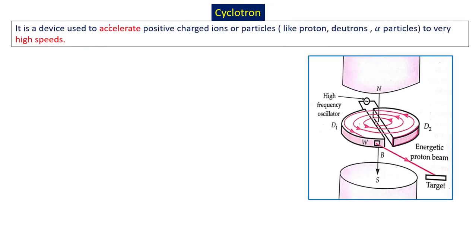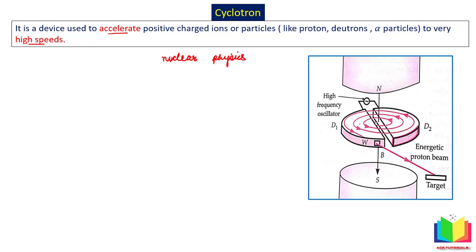Today we will study about the cyclotron. A cyclotron is a device used to accelerate positively charged ions or particles to very high speeds. We mainly accelerate protons in it. High speed particles are needed for different purposes — generally, we need high-energy protons for experiments in nuclear physics.